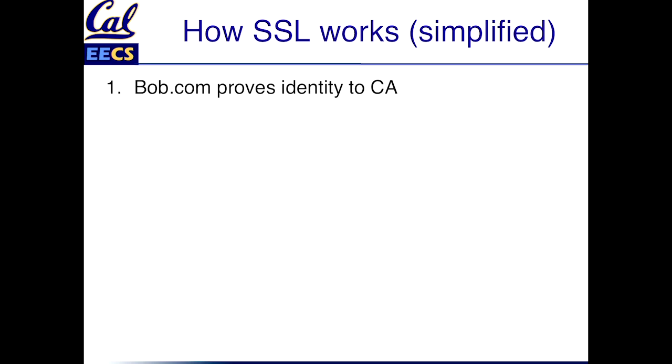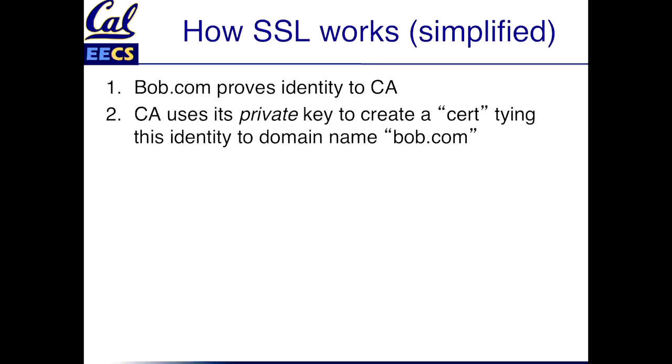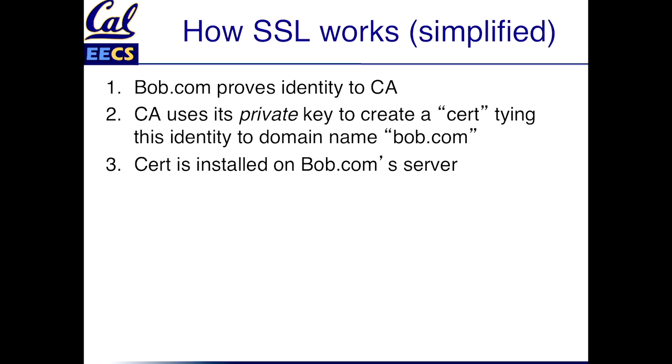That's the simplified version of public key crypto. How it works in practice is: if I'm rottenpotatoes.com or something, I go and prove my identity in some manner to a certificate authority — an entity where I am proving that I'm bona fide the operator of some website. I would like an SSL certificate that proves that fact. Once they have seen whatever documentation they ask me to provide, they will use their private key to essentially sign a certificate saying yes, this is domain name bob.com, this is what this site is. And I install that certificate signed by them on my server.